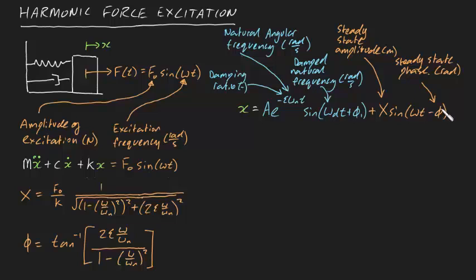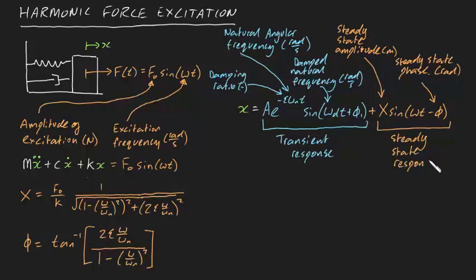You'll notice that the total response can be broken into two main parts. The first part is what we call the transient response, and the second part is what's called the steady state response. You'll notice the transient response looks identical to the equation of motion for a spring mass damper system without an external force acting on the block, and you can tell that its amplitude will die away over time.